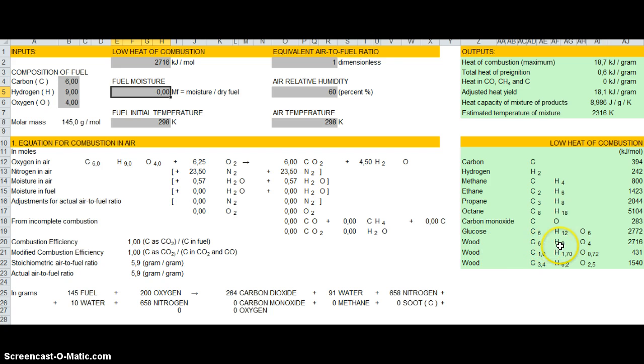So here 6, 9, 4. And then you have to provide the low heat of combustion that is given in literature. So here you have 2716 kJ per mole of wood. With these values you can derive for dry fuel.